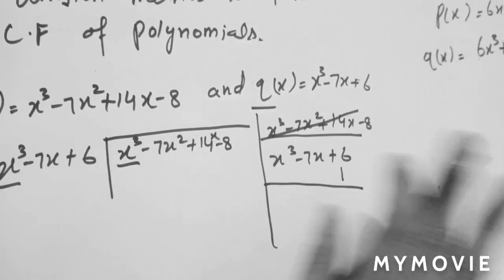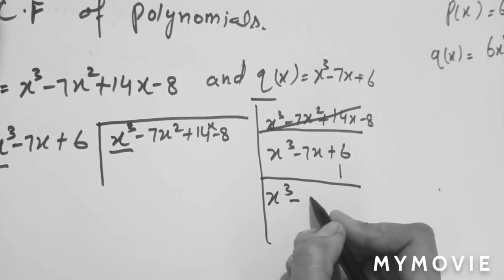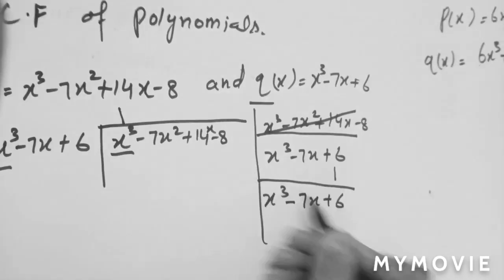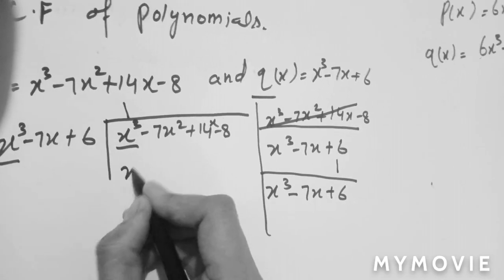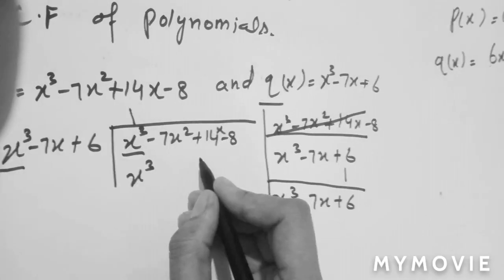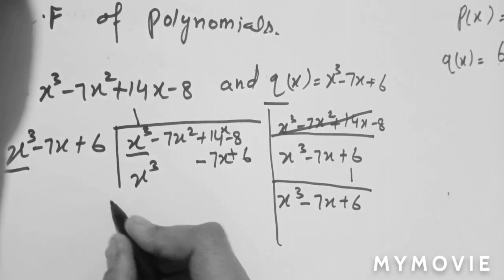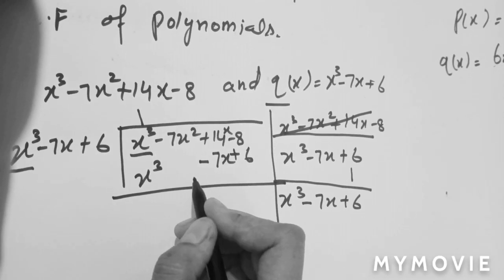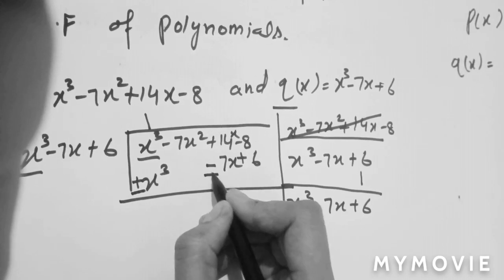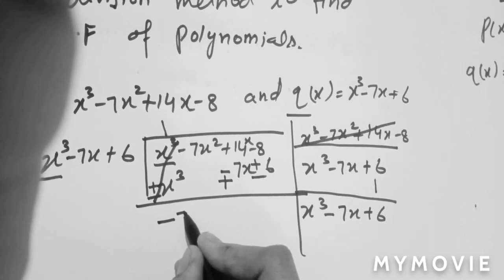We need x³, so we will multiply with 1 only. x³ times 1 is x³; minus 7x times 1 is minus 7x; and 6 times 1 is 6. We write 1 on the quotient side. x³ is written under x³, 7x is written under the x variable term, and 6 under the constant. Now we subtract: plus becomes minus, minus becomes plus.